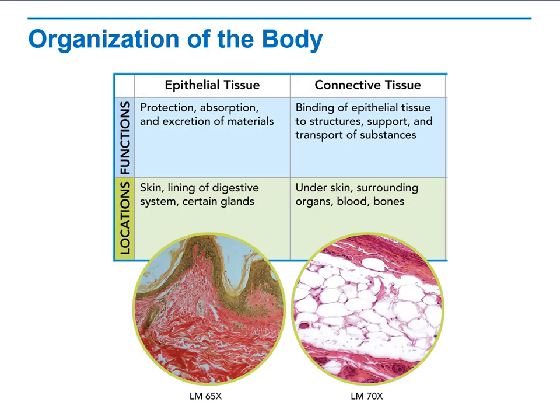First of all, organization of the body. When we talk about the types of body tissues we have, we have two main types of tissues, which are epithelial tissues and connective tissue. Epithelial tissues are used for protection, absorption, and secretion of materials, usually found in the skin, in the digestive system, and in certain glands found in your body. In comparison, connective tissue binds with the epithelial tissues to support structure and to transport substances in and out of the tissue, usually found under the skin and surrounding organs like blood and bones.